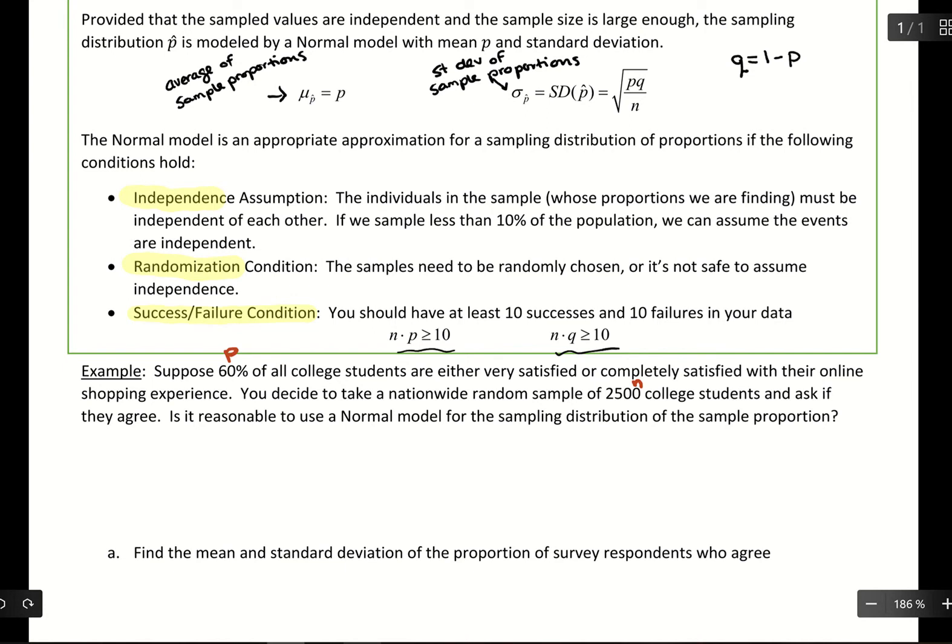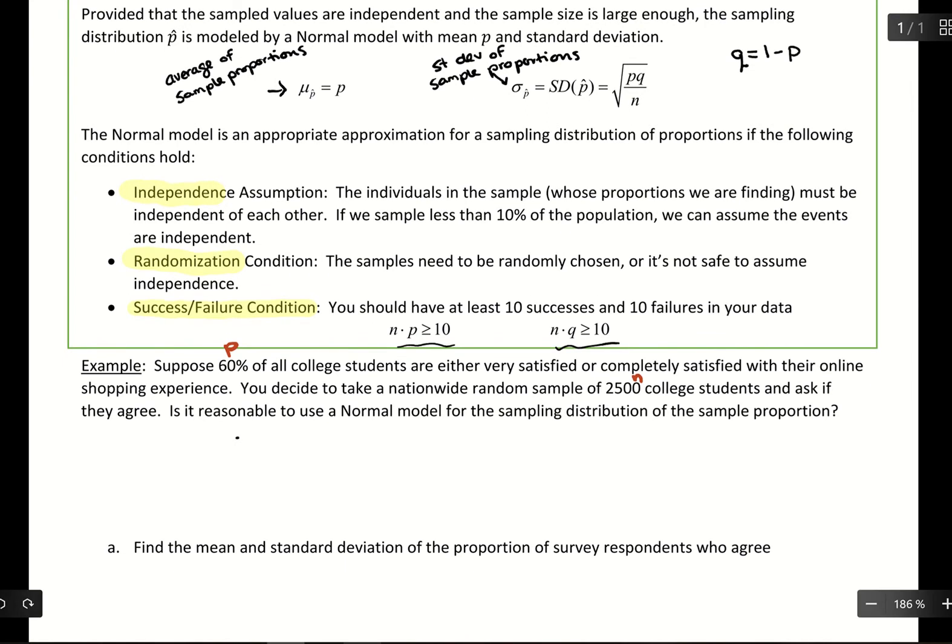And what we need to see is, do we pass the conditions? So we need to make sure we have independence, randomization, and we need to make sure we pass that success failure condition. So for independence, it's about are the results influencing each other? Typically randomization, random samples, and independence typically go together. Because if you're very random, there's not going to be much reliance on the individual values. So independence, yes, their responses are going to be independent of each other.